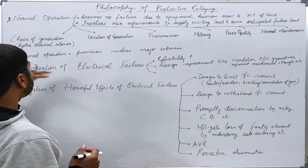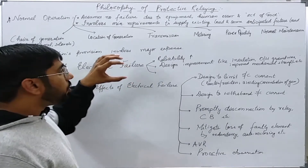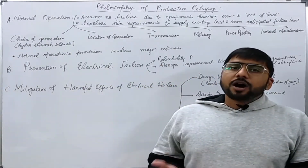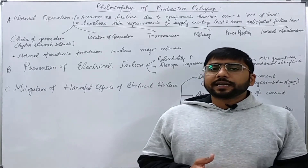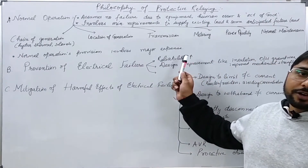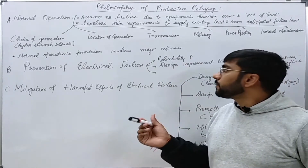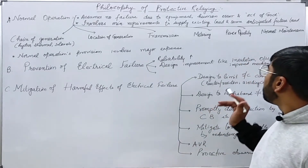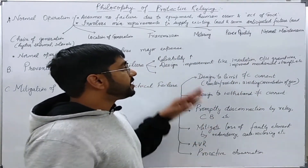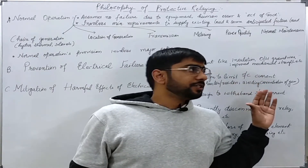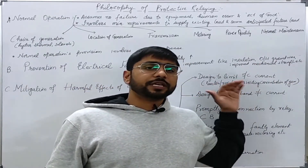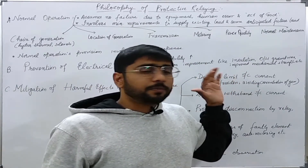Now there are two other aspects of a power system. We usually try to somehow prevent any electrical failure of the system. We do this by increasing the reliability using redundancy and improving the design of various equipment — like increasing the insulation level, improving insulation coordination, provision of overhead ground wires on transmission lines, and improved mechanical structure of the equipment.